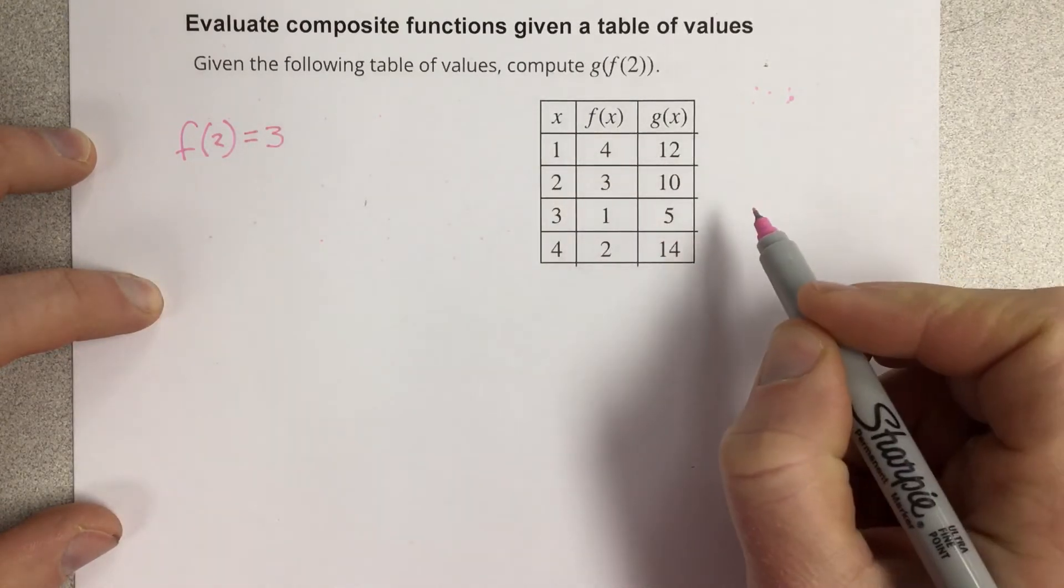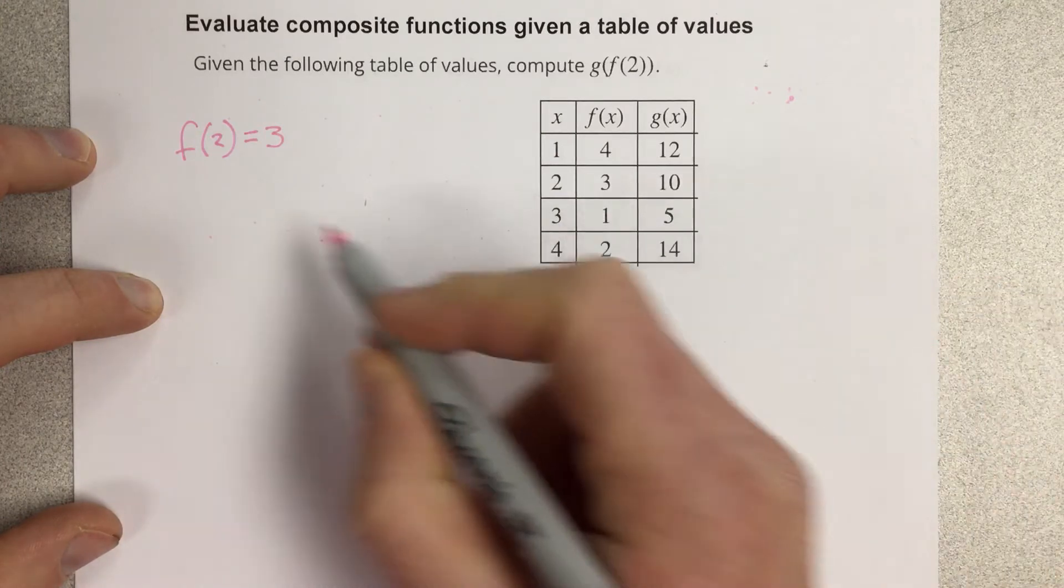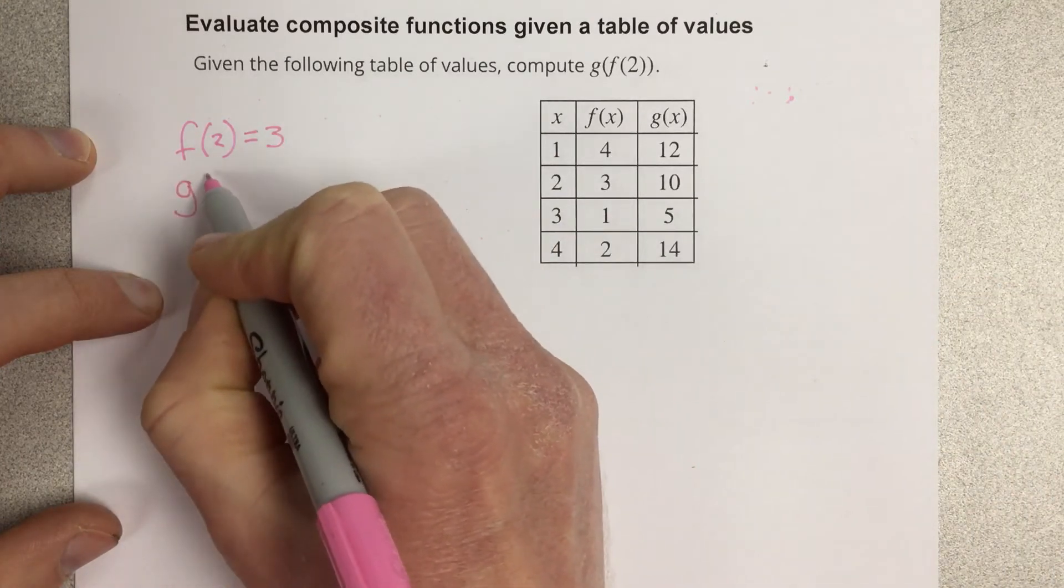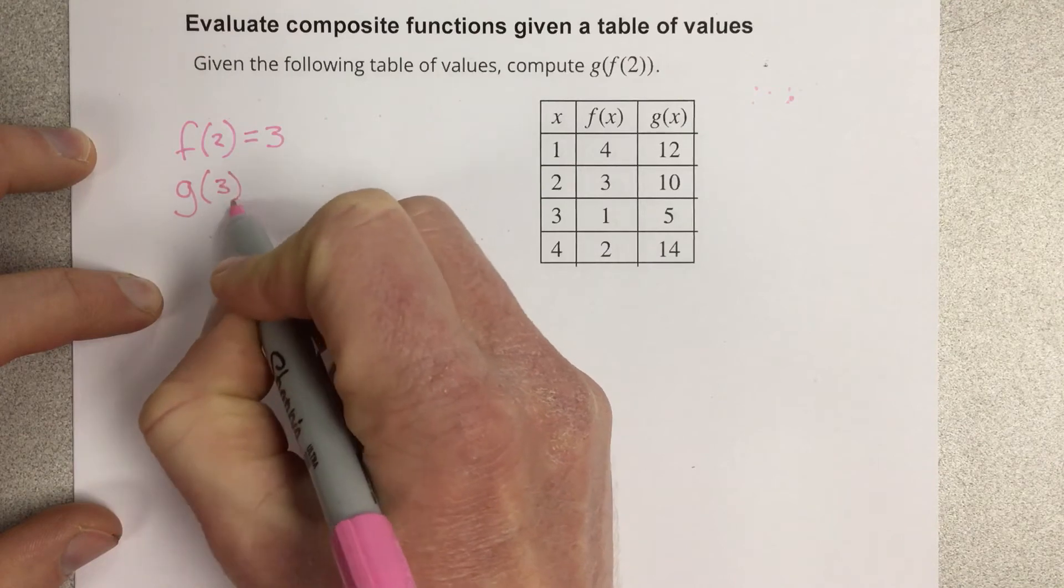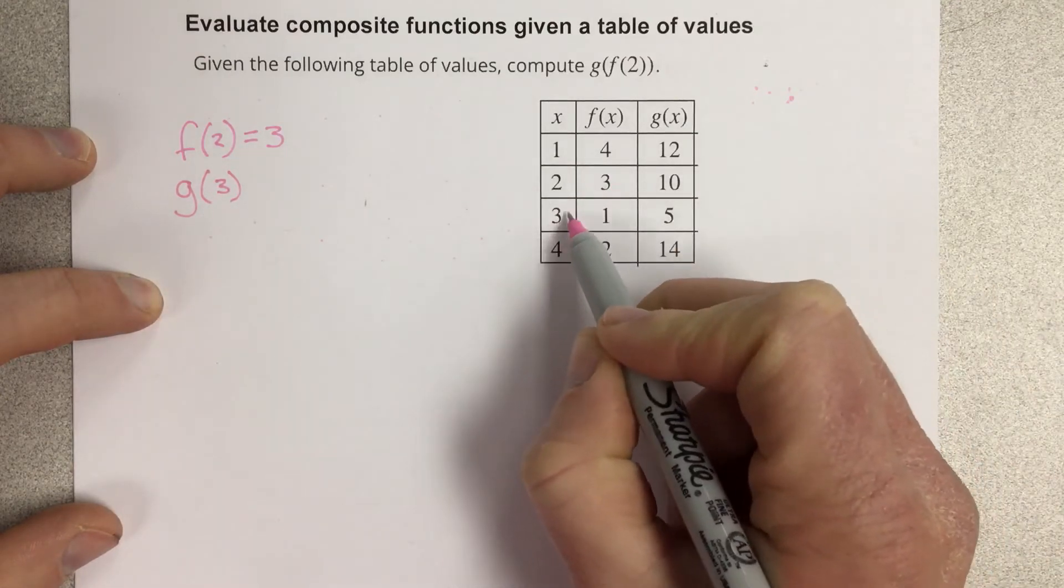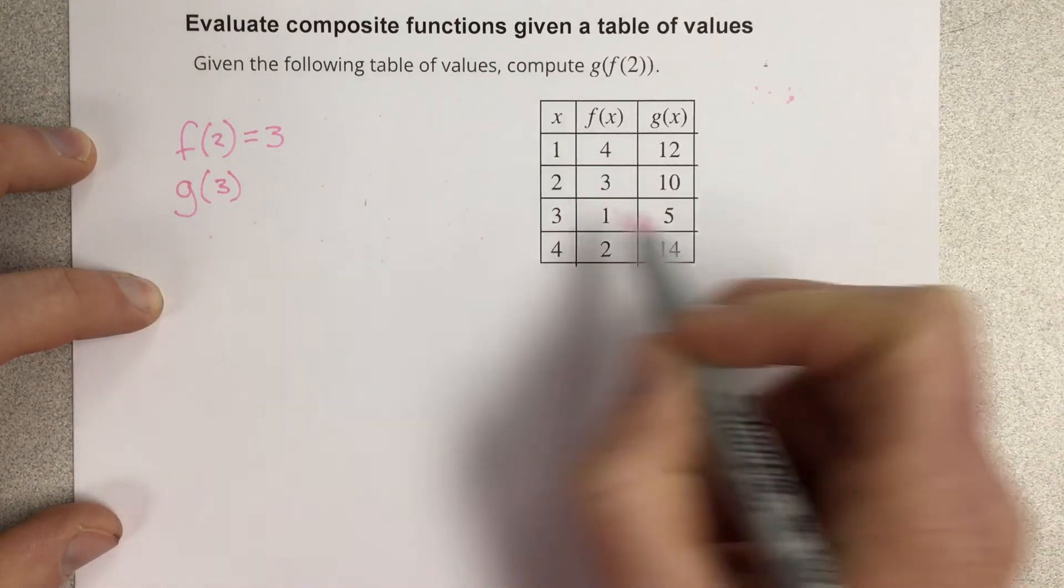So I can write f of 2 being 3. And then I really need to figure out what g of 3 is. So if I go to the x value of 3 and look at the g function, I get 5.